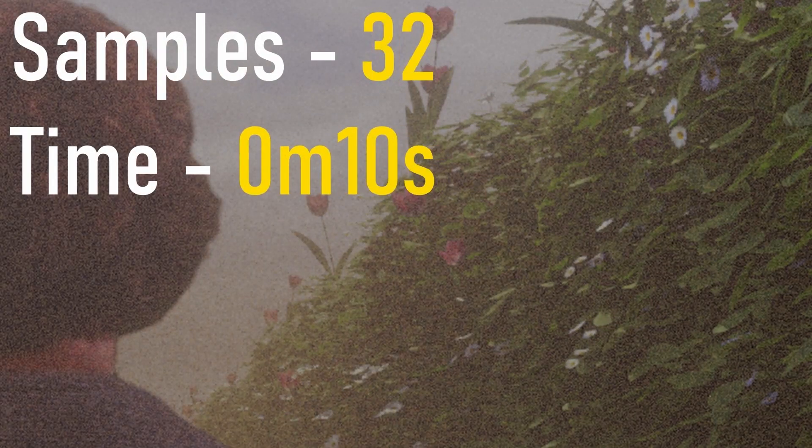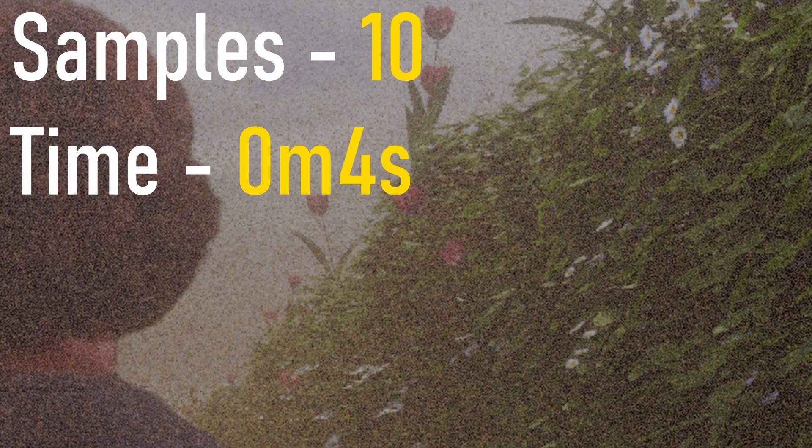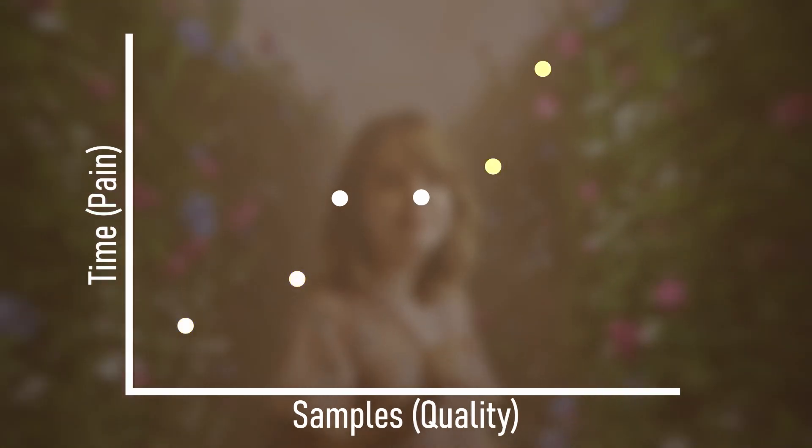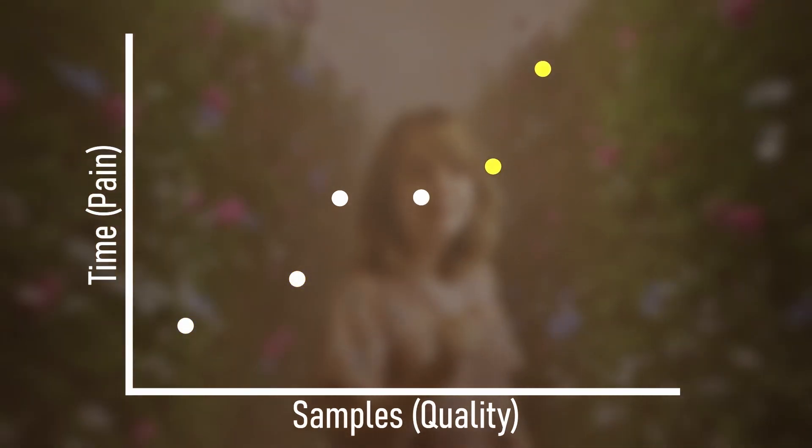And this is the compromise we are always forced to deal with. Do I want fast render times but at a lower quality, or high quality frames that take forever to compute? It's just this compromise that no matter what we need to think about — or do we?